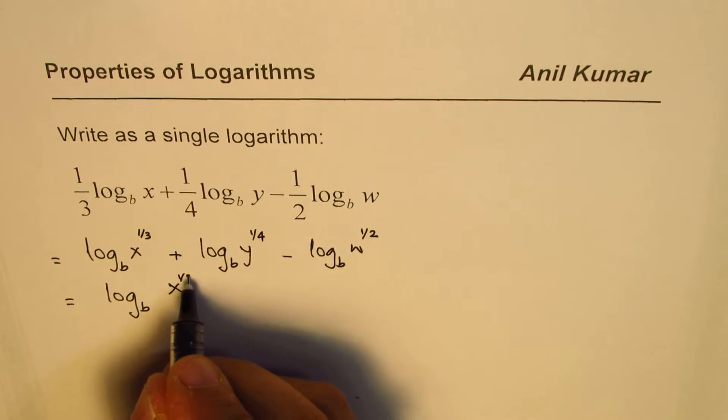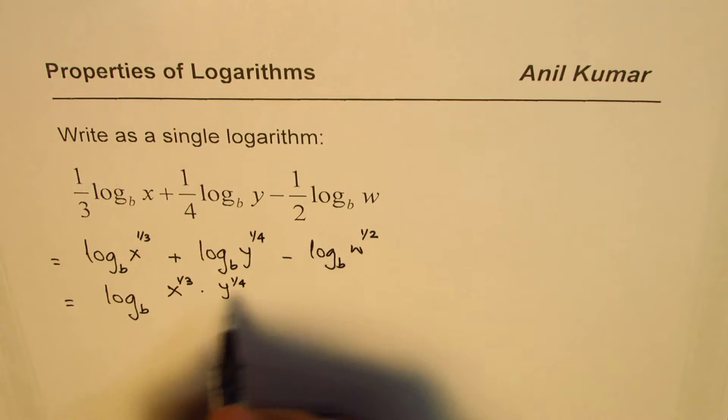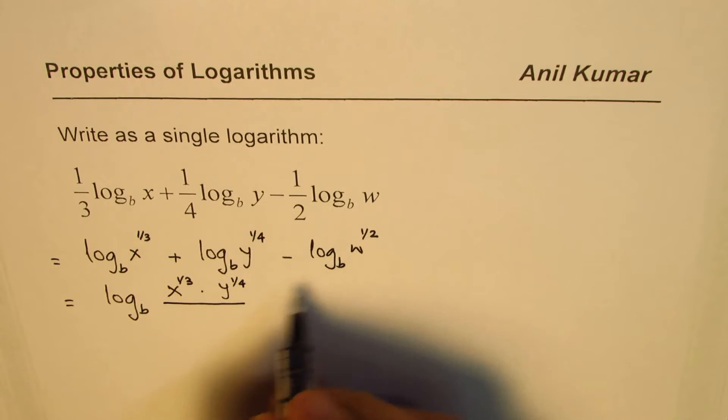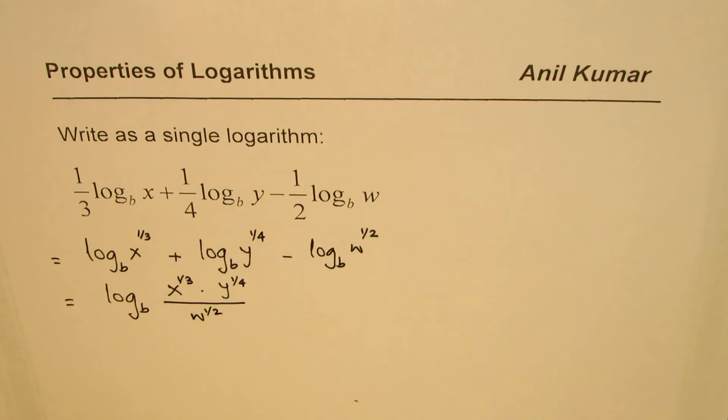...take away means divide by. So you have to divide this by w to the power of 1/2. So that is what you get.